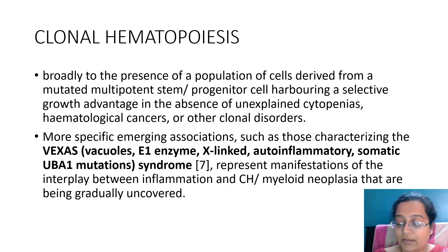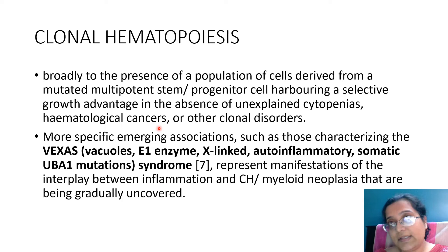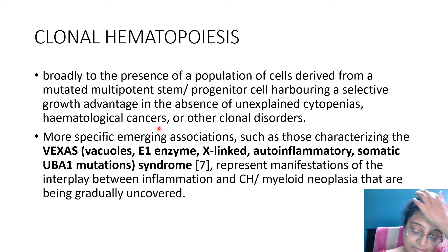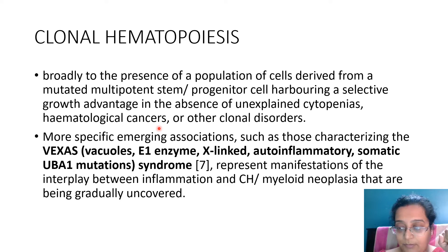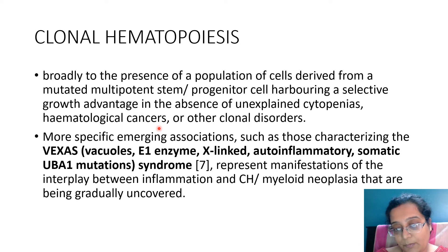Clonal hematopoiesis has been given a lot of stress — this term was there initially and now WHO has included it in the classification. Broadly, the presence of a population of cells derived from mutated multipotent progenitor cells with selective growth advantage, and in the absence of cytopenias, cancers, or clonal disease, means there is a group of cells identifiable as having clonal propensity and stem-cell-like features. However, they are not categorized into any particular cytopenic myeloid neoplasm or specific cancer — they are still clonal but not full-blown cancers. These clonal cells are known as CHIP — clonal hematopoiesis of indeterminate potential — meaning these clonal cells have the propensity to develop into a cancer, but where or how much they will develop is not more specifically determined.